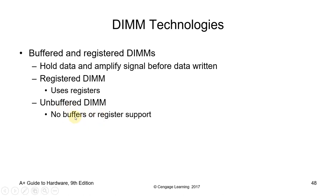Buffered and registered DIMMs hold data and amplify the signal before data is written. Unregistered DIMMs use registers. Unbuffered DIMMs have no buffer or register support.